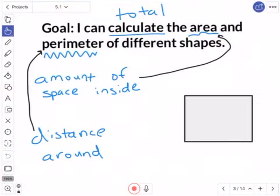We are starting our brand new unit, Unit 5. So this is Unit 5, Lesson 1. Before we get into it, we're going to read our goal, and I can calculate. Everybody read it with me, ready? I can calculate the area and perimeter of different shapes.